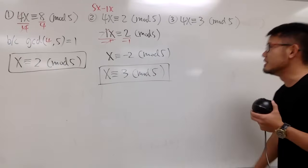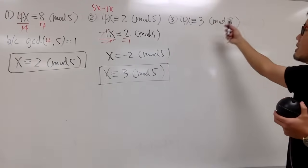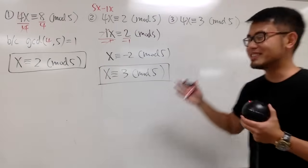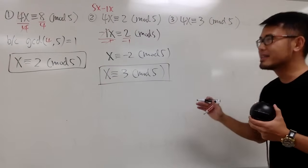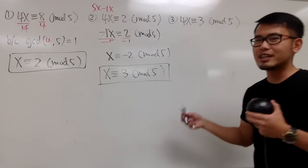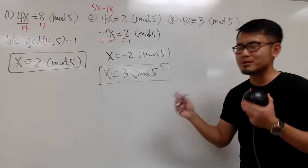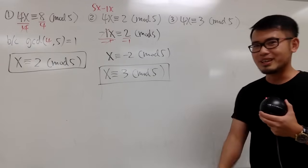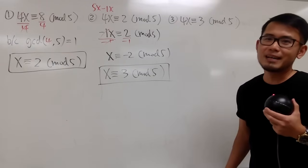And lastly, we have 4x is congruent to 3 mod 5. Well, I will leave this to you guys to think about it. Because you can just use the first one and the second one. Just make some combinations of them. Just combine both methods or things like that. This right here should be pretty easy for you guys. So, I am done.